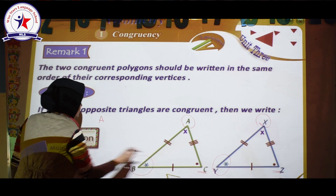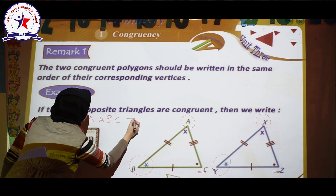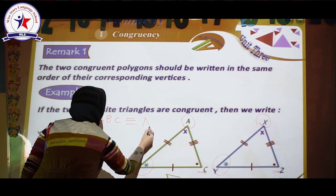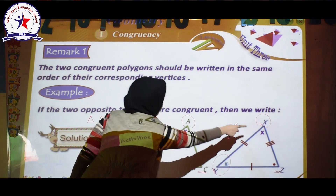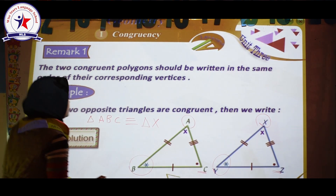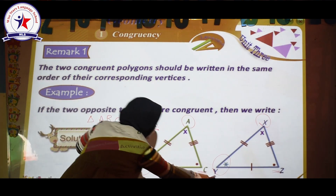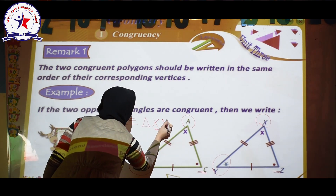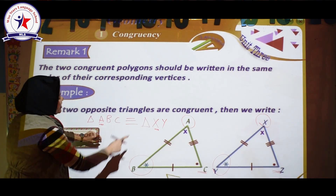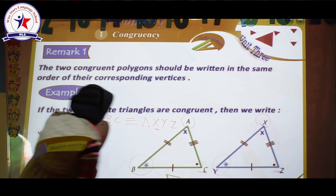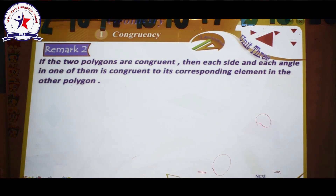If we write triangle ABC congruent to triangle — we start from A, then we must start from the corresponding angle to A, which is X. The next one: B corresponds to Y, so we say XY. Then C corresponds to Z, so we say XYZ. Therefore, triangle ABC is congruent to triangle XYZ.